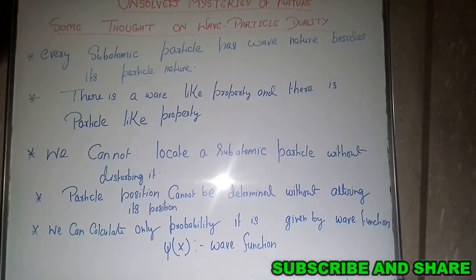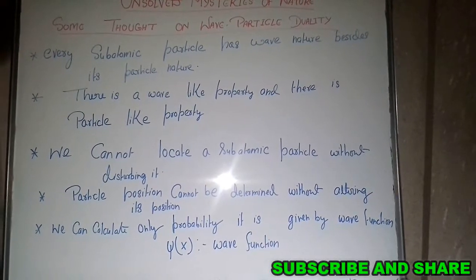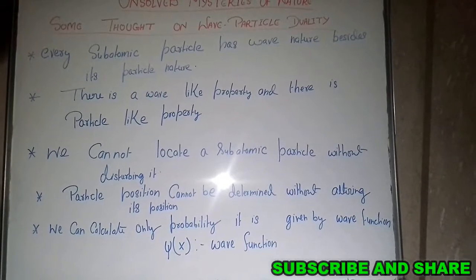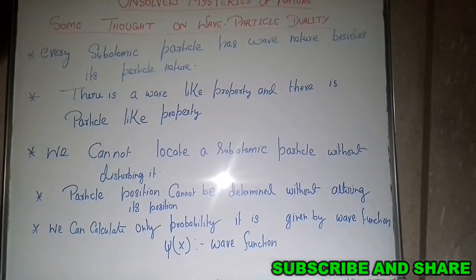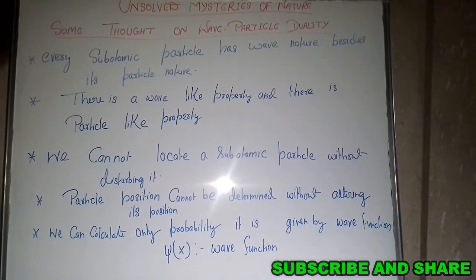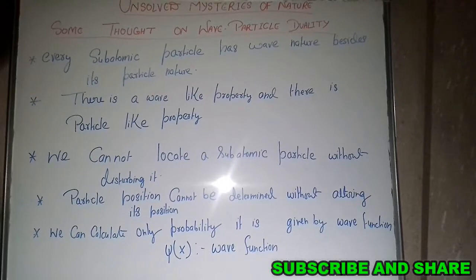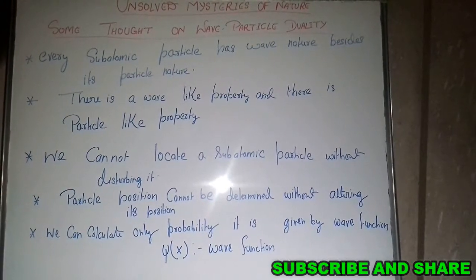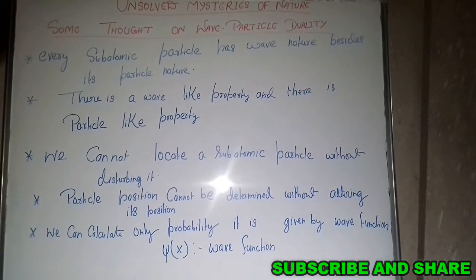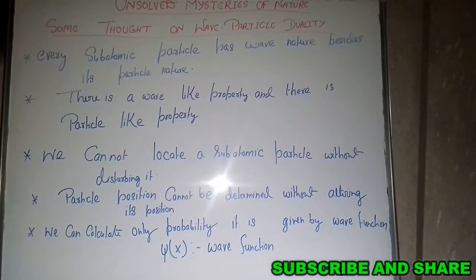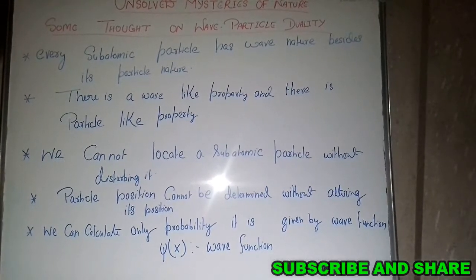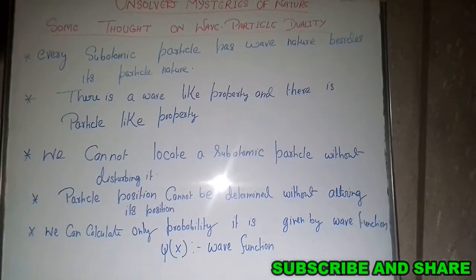We can only calculate the probability of finding a particle. That probability is given by the square of the wave function psi(x). And this psi(x) tells everything about that particle. But what is this psi(x)? What is this wave function — is it a real one, or is it dependent on or independent from the particle? That is the question.